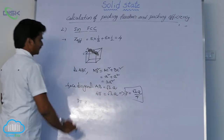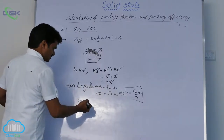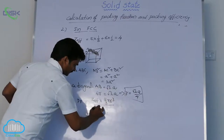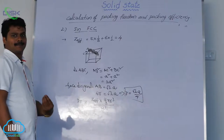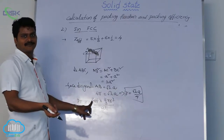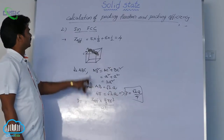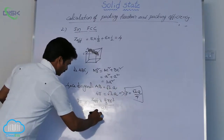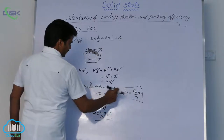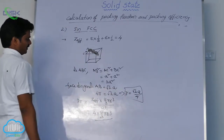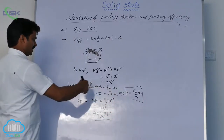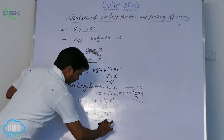First, let us calculate packing fraction. The formula for packing fraction is: packing fraction equals effective number of atoms times (4/3) pi R cubed, divided by A cubed. This is the common formula for any Bravais lattice in cubic system, because for cubic system, volume of unit cell is A cubed. The effective number Z for FCC is 4. So here we have 4 times (4/3) pi R cubed divided by A cubed. The relation between A and R is from 4R equals root 2 times A, so A equals 4R divided by root 2.